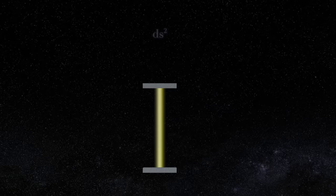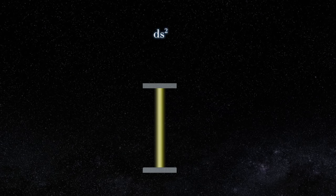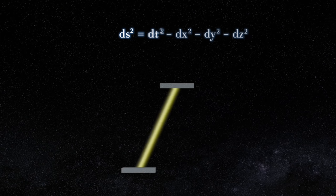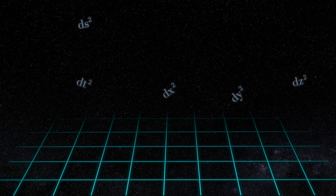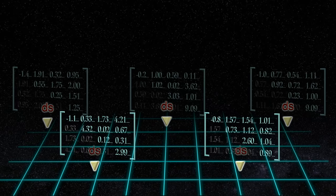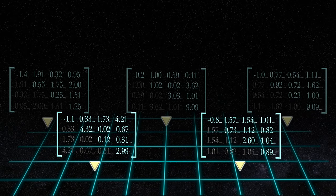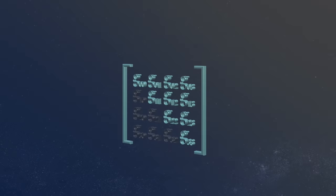But since the space-time interval contains information not just about how time is changing across the map, but also about how space is changing too, if you want to keep all this information separate, you're gonna need more than just one number at each point on your map. In fact, you're gonna need ten numbers at each point. And this is where the tensor part comes in.